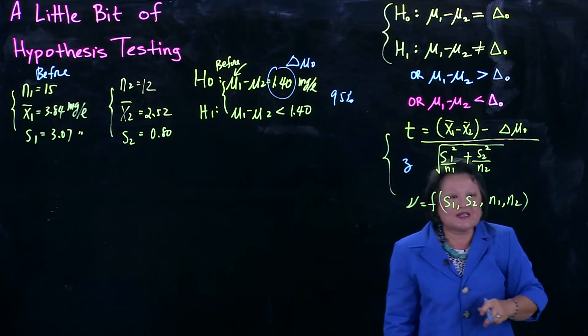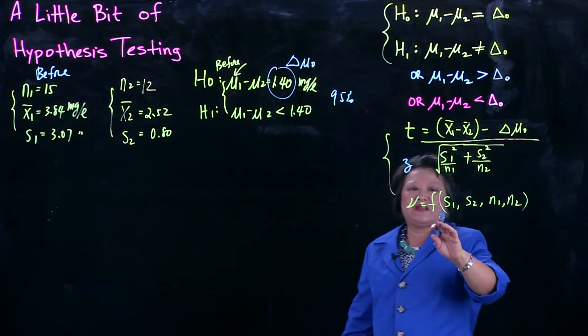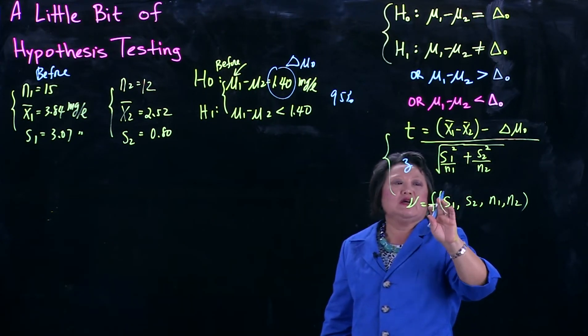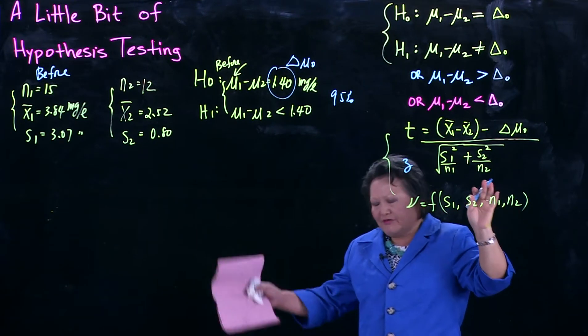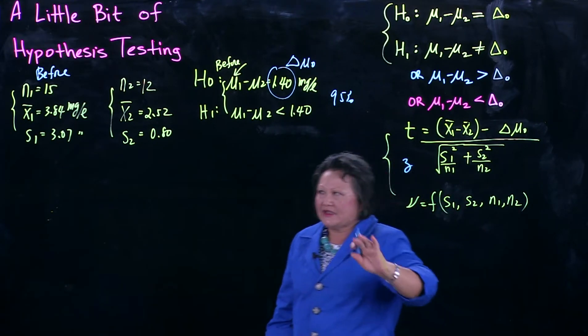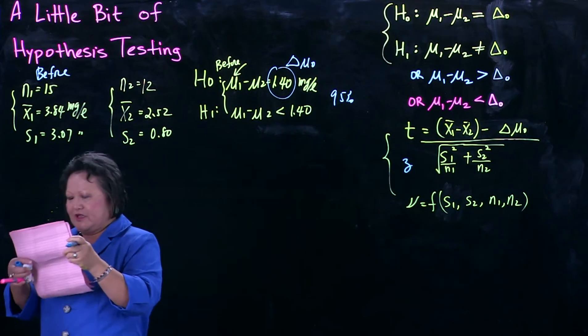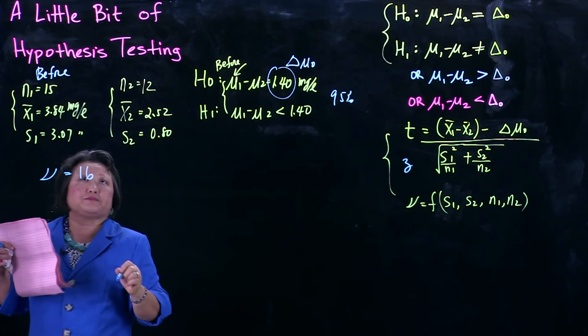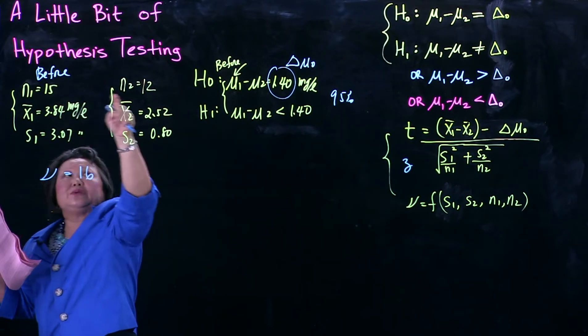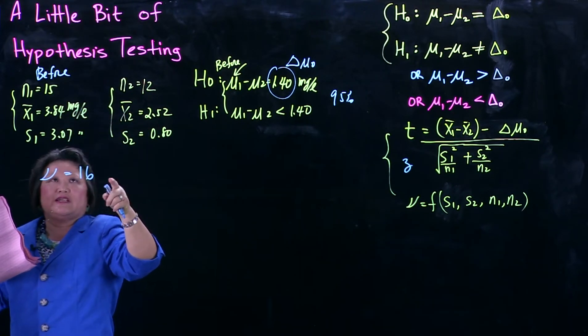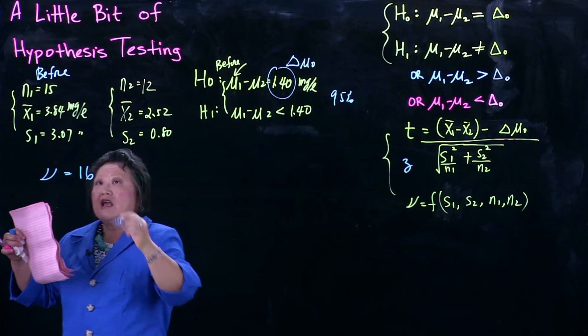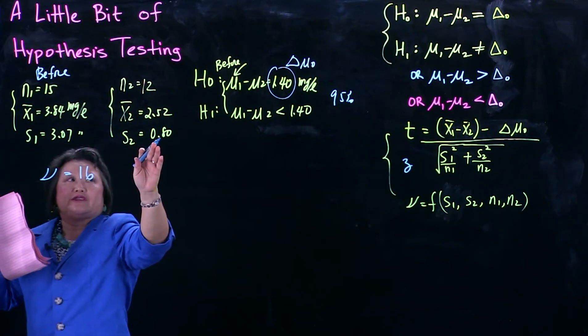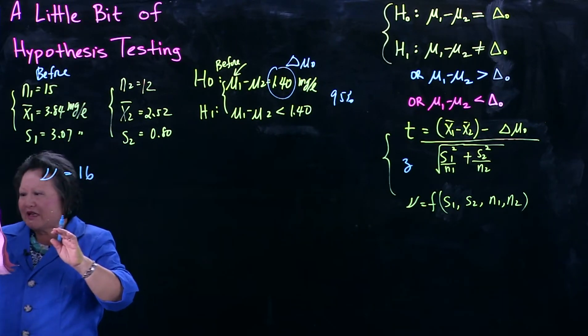What's the effective degree of freedom? It's some complicated formula, a function of S1, S2, N1, N2. You can find it in any table. I did all of that complicated arithmetic, so I come up with a nu equal to 16. Notice it's not 27. Why 16? It depends on S1, S2, and so on. Because this is rather large, this is small, so that has something to do with it.